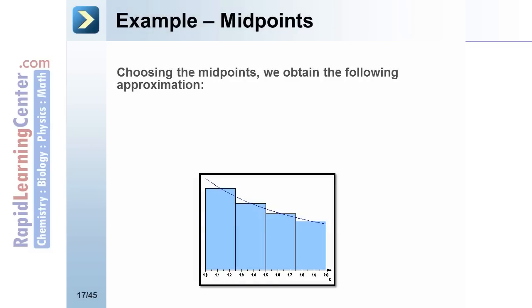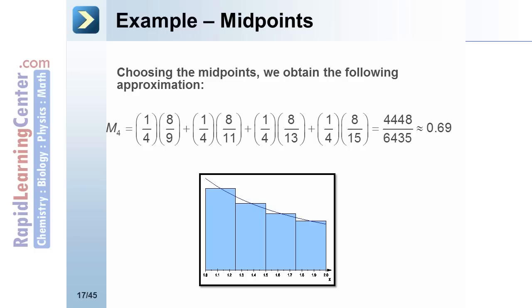Choosing the midpoints, we obtain the approximation M4 equals 1/4 times 8/9 plus 1/4 times 8/11 plus 1/4 times 8/13 plus 1/4 times 8/15, which equals 4448/6435, approximately 0.69.